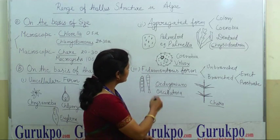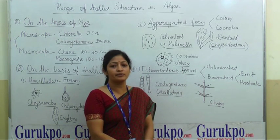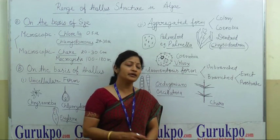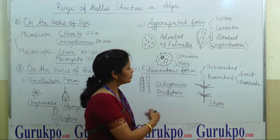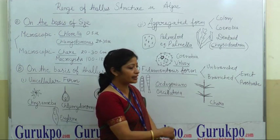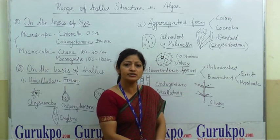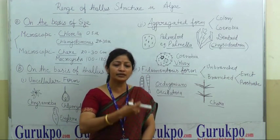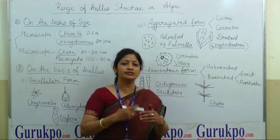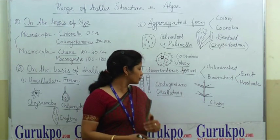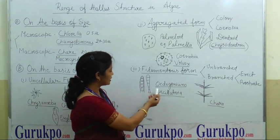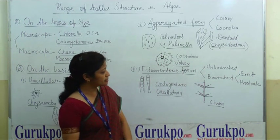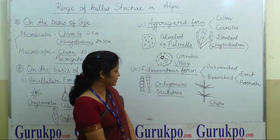Another example is filamentous forms. In filamentous forms, algae divide regularly, and on the basis of their divisions, algae may be of two types: branched or unbranched. In unbranched algae, there is a single filament and the cells are arranged in a row. Examples are Oedogonium and Oscillatoria — these are single or unbranched filaments.